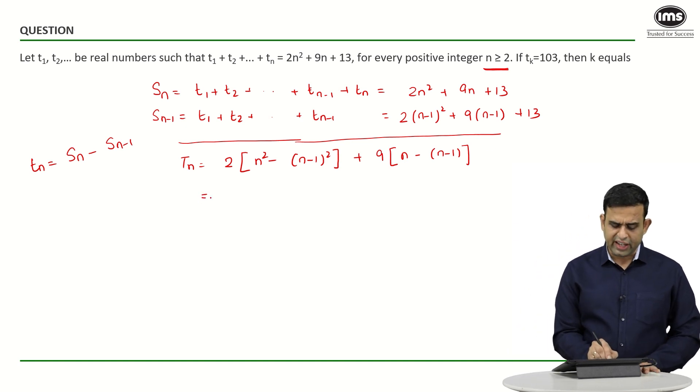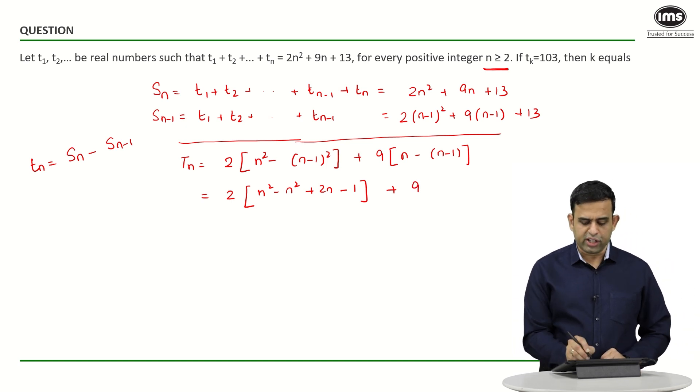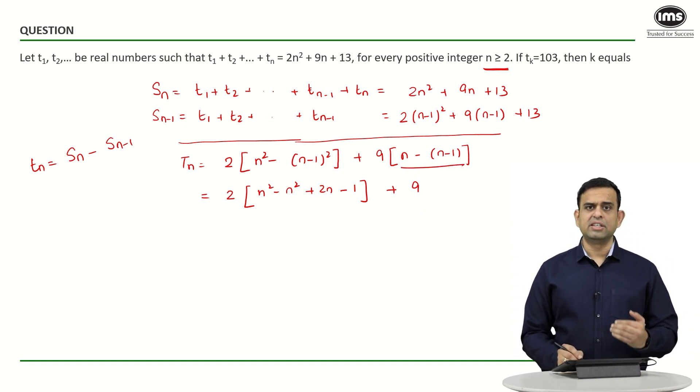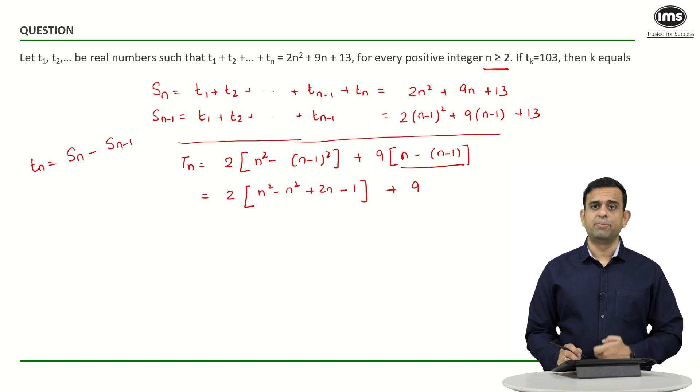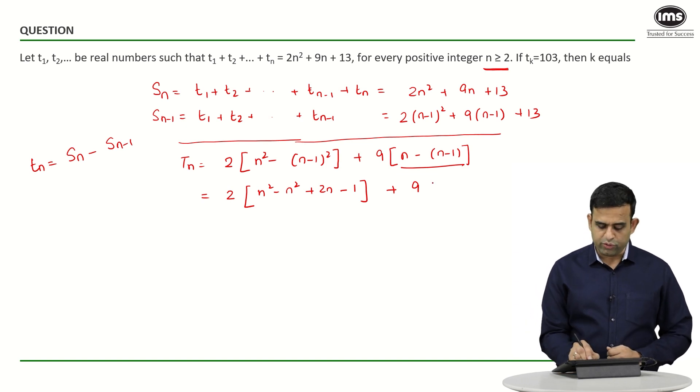So if I simplify this slightly, what do I get? 2(n² - n² + 2n - 1) plus 9, because if I look at the bracketed term, I will get n - n + 1, which becomes 1 in the bracket. Hence I get 9 times 1.